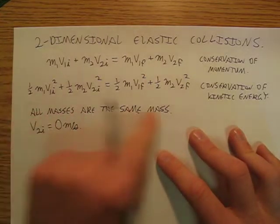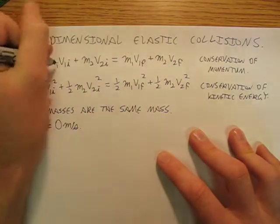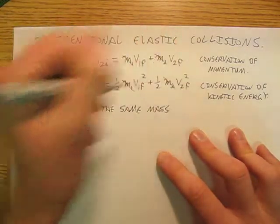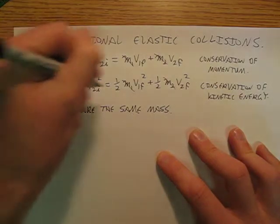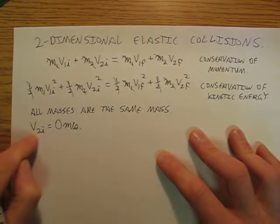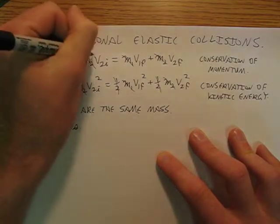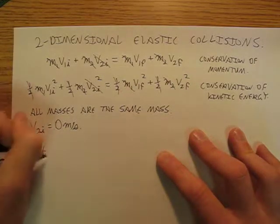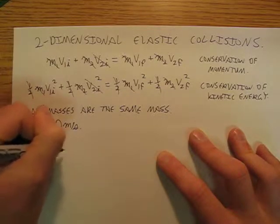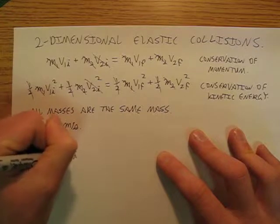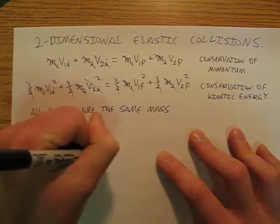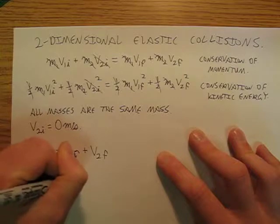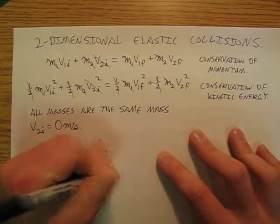So we're going to say since all masses are the same mass, then all the masses are going to cancel out of both sides of the equation, because they're all the same. So every single thing has the same mass. While I'm at it, I can kill those one-halves. And then, we're saying v2i is zero meters per second. So I can kill that, and I can kill that. And so I'm going to get down to v1i is equal to v1f plus v2f, and I can say v1i squared is equal to v1f squared plus v2f squared.